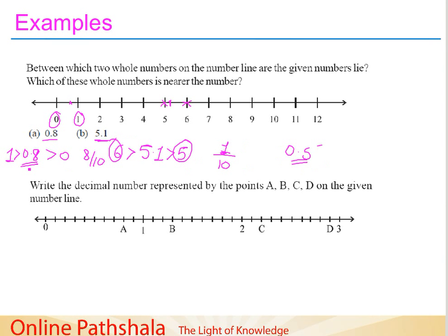Let us try to understand the next question: write the decimal number represented by points A, B, C, D on the given number line. Here the number line is divided into 10 equal parts between 0 and 1, 10 equal parts between 1 and 2, and 10 equal parts between 2 and 3. Point A is at the 8th part between 0 and 1. So that means it is 0 plus 8 by 10, which gives the number 0.8.